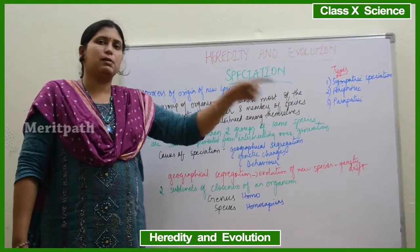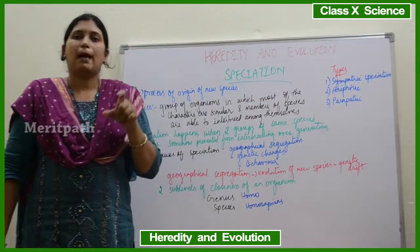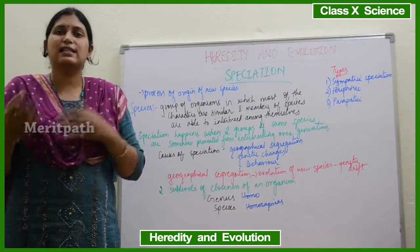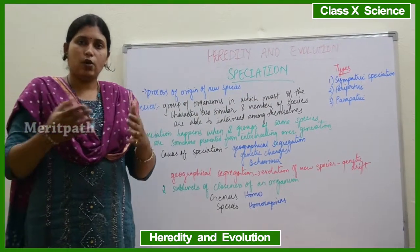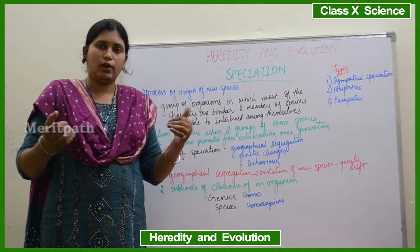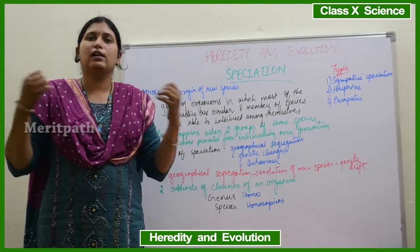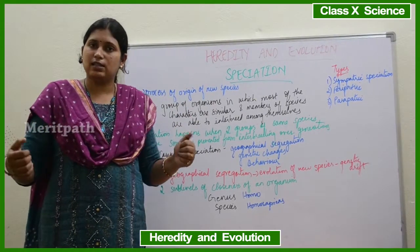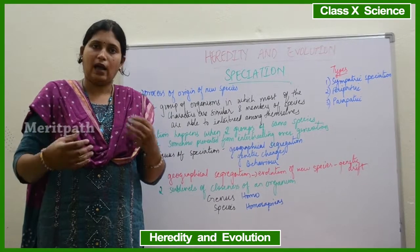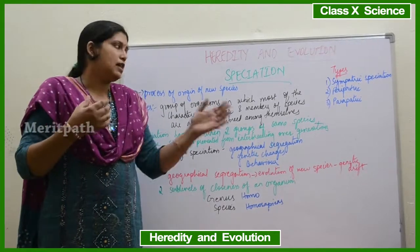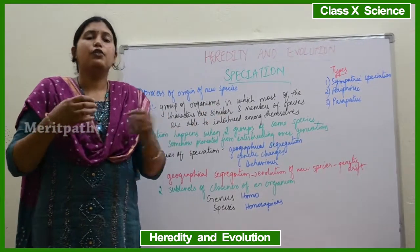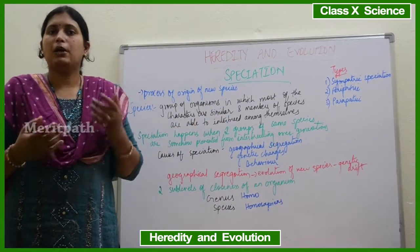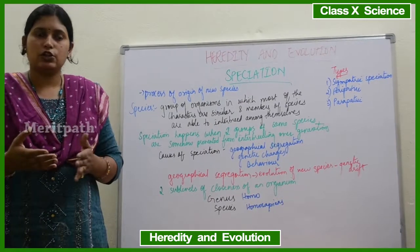Then there is parapatric speciation. Parapatric speciation relates to distance — organisms which are living away from each other and are distanced from each other also have some amount of new species formed because of variation.